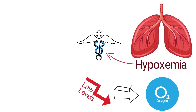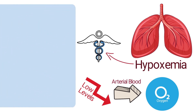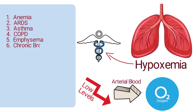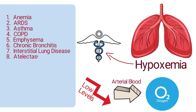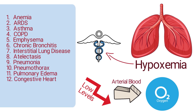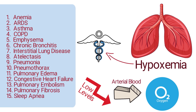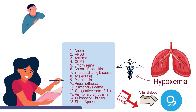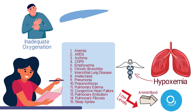Hypoxemia is a medical term that refers to low levels of oxygen in arterial blood. Some of the most common causes of hypoxemia include anemia, ARDS, asthma, COPD, emphysema, chronic bronchitis, interstitial lung disease, atelectasis, pneumonia, pneumothorax, pulmonary edema, congestive heart failure, pulmonary embolism, pulmonary fibrosis, and sleep apnea.